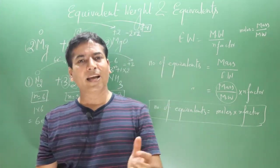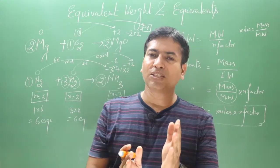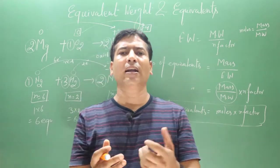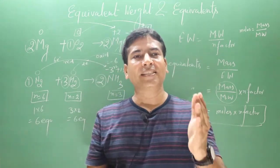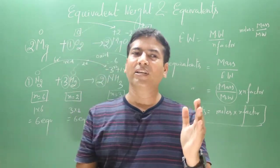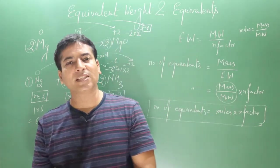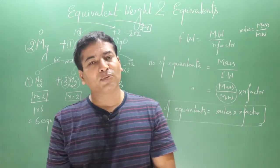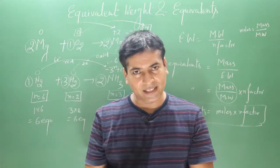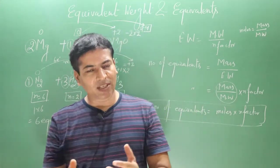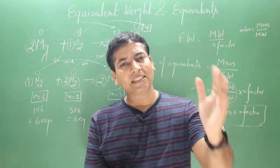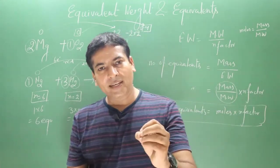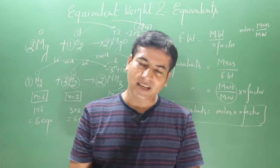In any chemical reaction, the number of equivalents of each reactant equals the number of equivalents of each product. By using this concept, we can solve numericals without balancing the equation — we don't even need to write the complete chemical reaction to calculate the desired quantity of a substance.